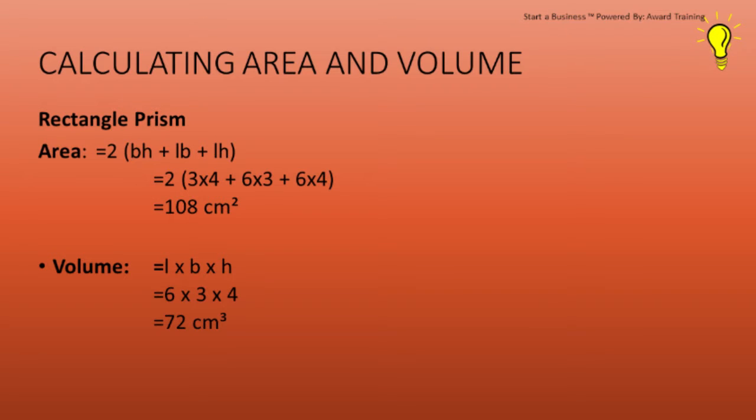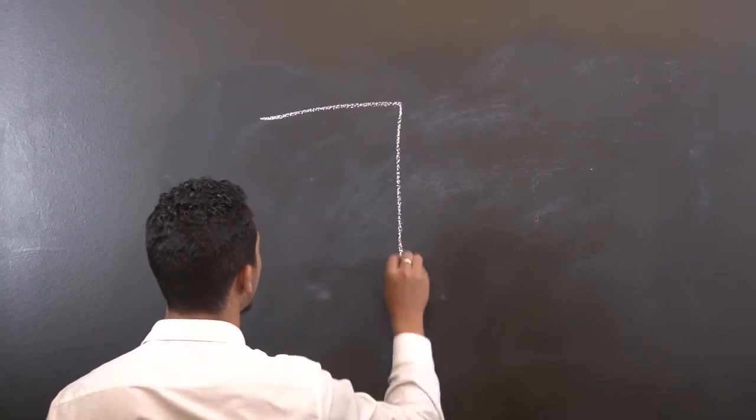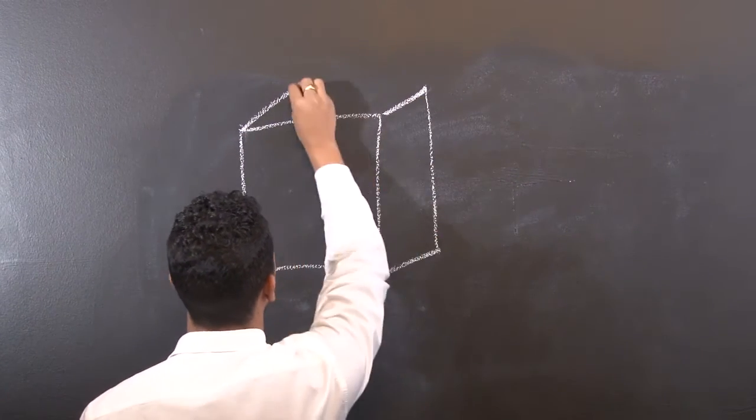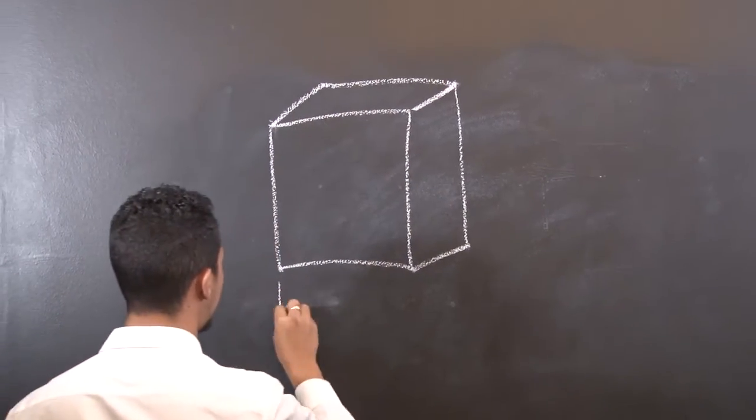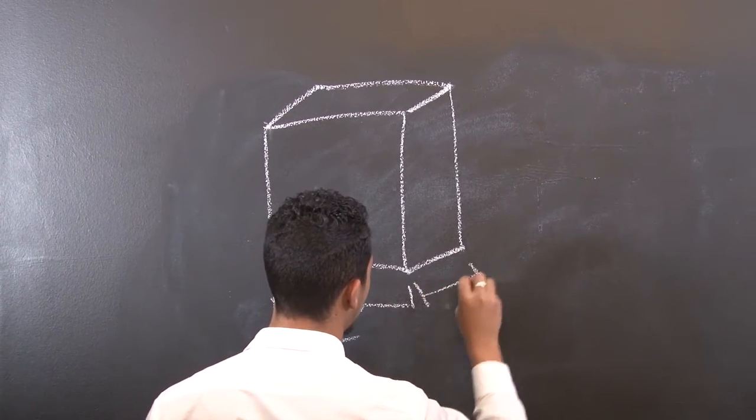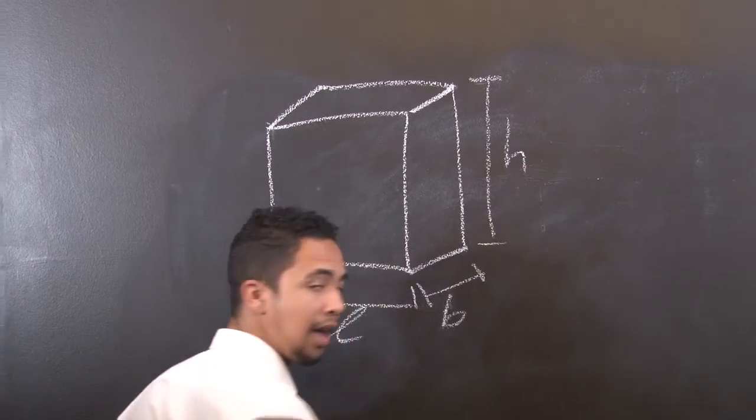Let's take a look at how to calculate the area of a rectangular prism. The formula to calculate the area is 2 times open bracket, breadth times height, plus length times breadth, plus length times height, close bracket. So a rectangular prism looks like this, and over here we have the length, breadth, and height.